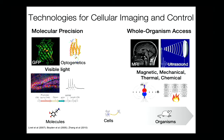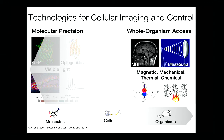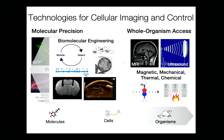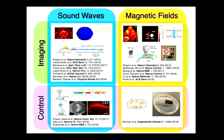What we try to do in my lab is take the physics of sound waves and magnetic fields and extend these technologies down to the molecular and cellular level through biomolecular engineering — finding, engineering, and evolving proteins or other genetically encodable materials that instead of interacting with photons, can interact with sound waves and magnetic fields. Our lab's research breaks down into ultrasound and magnetic fields for MRI, applied to imaging and controlling cell function. Today I'll focus on imaging, starting mostly with ultrasound, and then finishing with a few things for MRI.